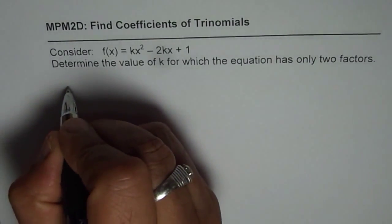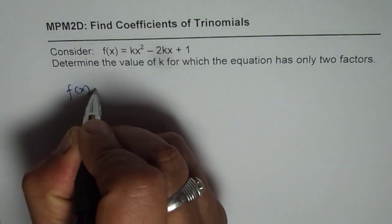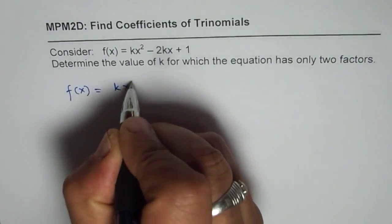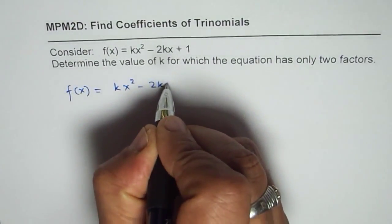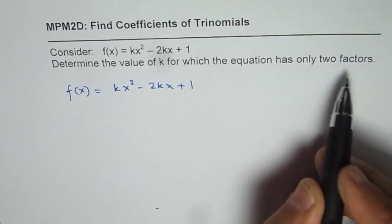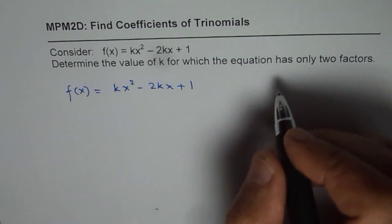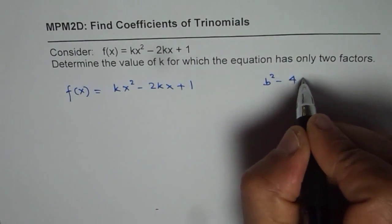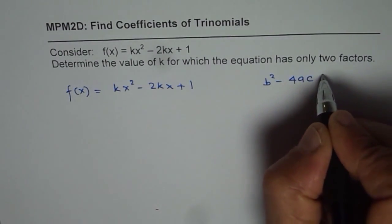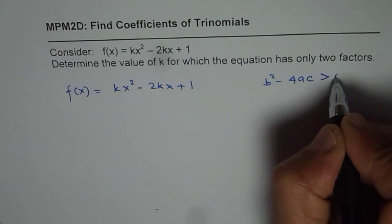How to do it? So let's look into the function again. It is kx squared minus 2kx plus 1. If we need two factors that means B squared minus 4ac, the discriminant, should be greater than 0.